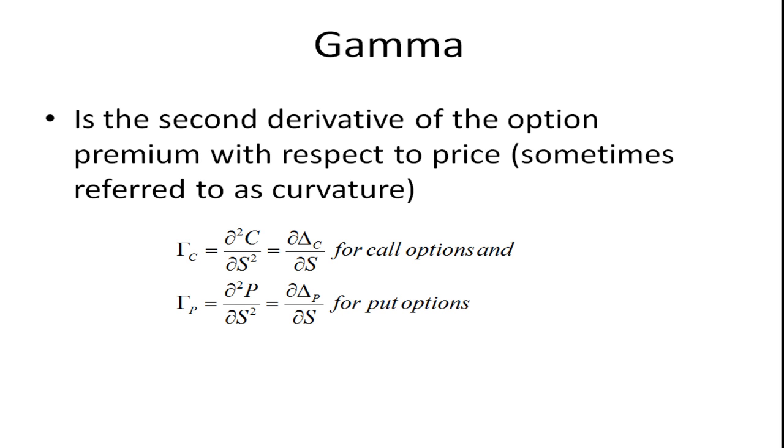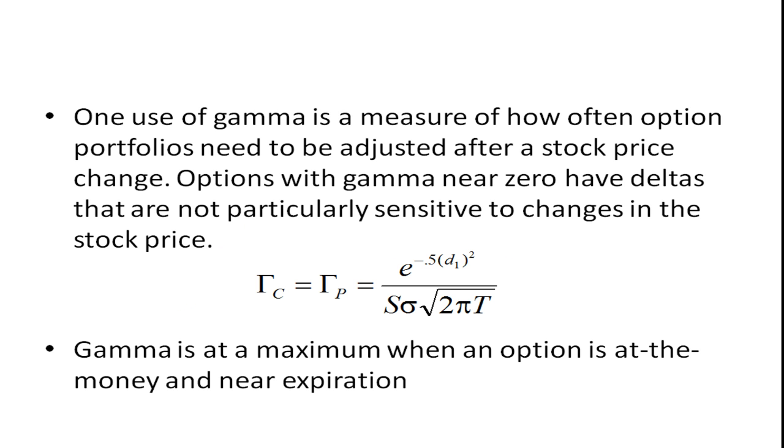So, gamma is the second derivative of the option premium with respect to price. And sometimes it's referred to as curvature. And again, you can see we're taking a second derivative, or in this case, we're taking the derivative of delta with respect to price, whether it's for a put or a call. And if you work that out, you'll get this formula, and it turns out that the gamma for a call is the same as the gamma for a put.